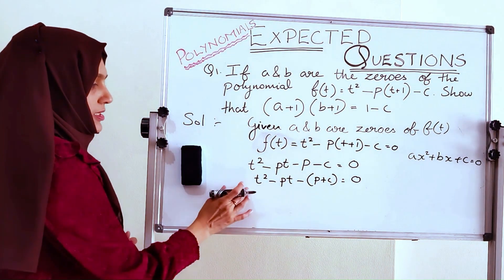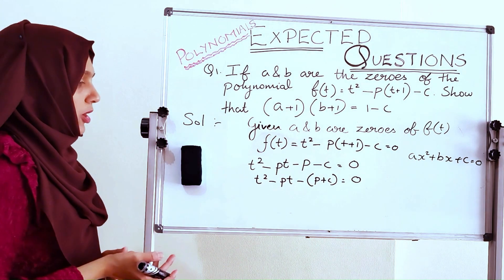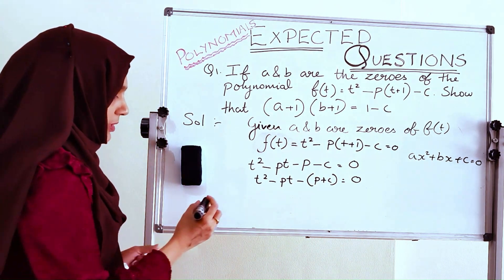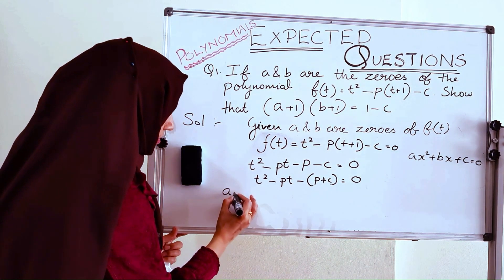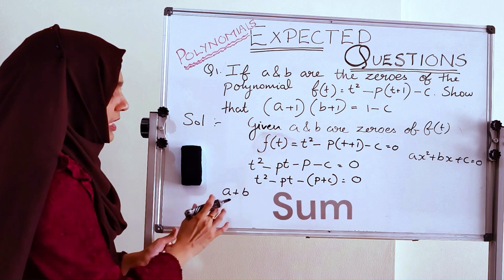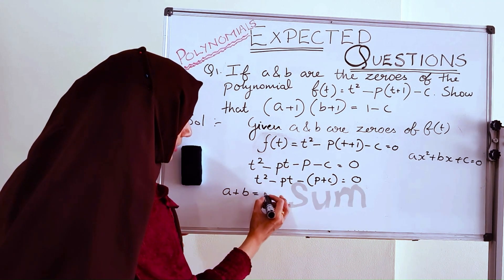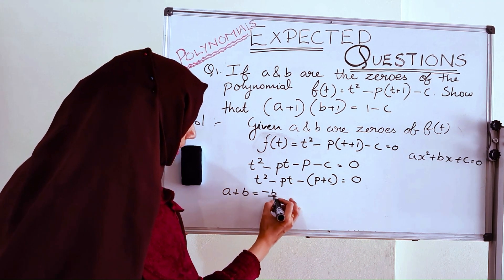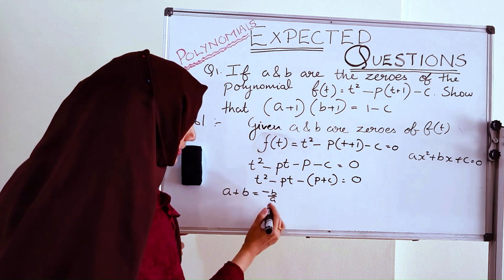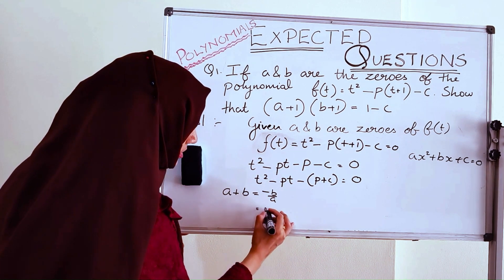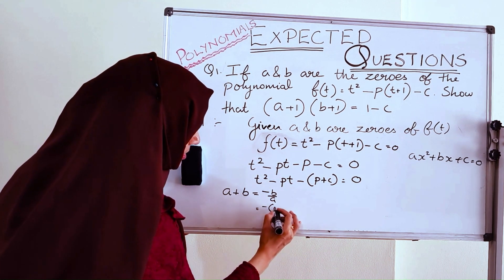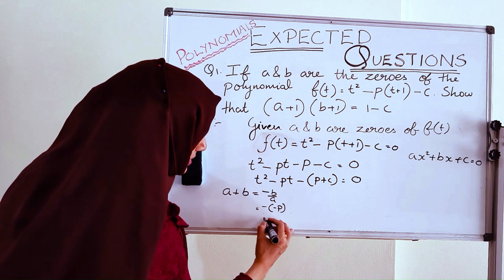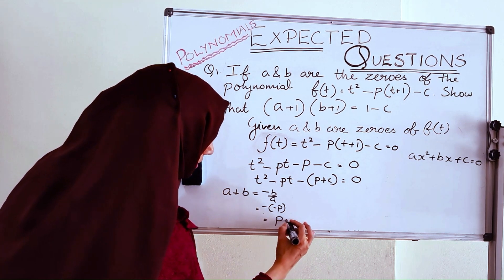After this, let us find out the product and the sum of the zeros of the polynomial. The sum of the zeros of the polynomial is equal to −b/a. Here, b is −p, so minus of minus p is equal to plus p. This is equation number 1.